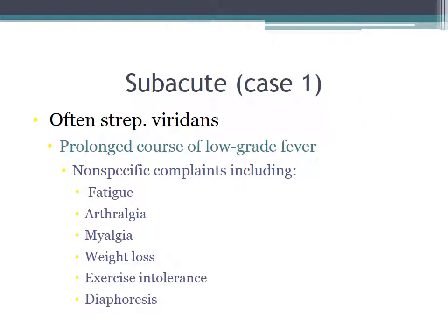There is an acute form and a subacute form of bacterial endocarditis, and case one represents the subacute form. The subacute form is often strep viridans. You see a prolonged course of low-grade fever and nonspecific complaints, which include fatigue, arthralgia, myalgia, weight loss, exercise intolerance, as well as diaphoresis.